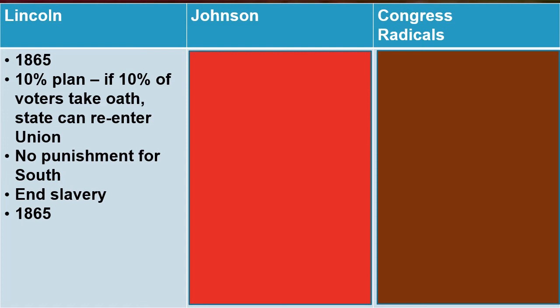He believed in reconciliation — sort of let's hug this out and bind up the nation's wounds. And that meant that perhaps the most powerful change he urged was one he had also begun during the war: the ending of slavery. This was done in 1865, not by the Emancipation Proclamation, but by the 13th Amendment. Overall, Lincoln's plan is characterized as pretty lenient, with the only major change being the ending of slavery.